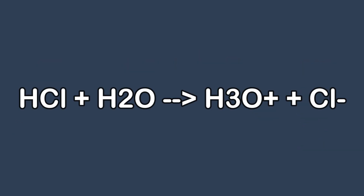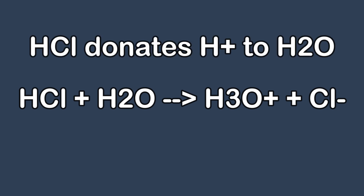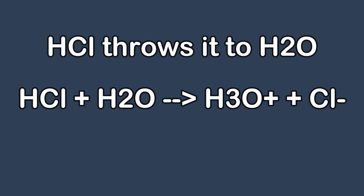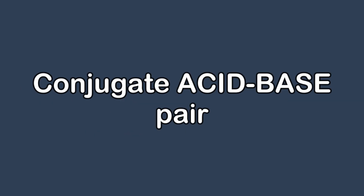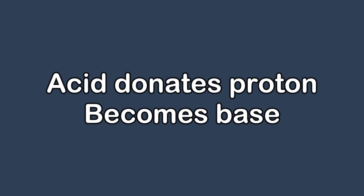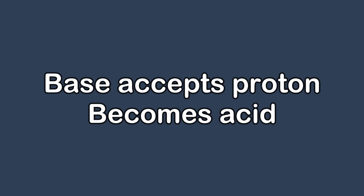An actual example: hydrogen chloride plus water turns into hydronium plus chloride minus. In this, the hydrogen chloride is the proton donor, or the pitcher, and the H₂O is the proton acceptor, or the catcher. In Bronsted-Lowry equations, we can find the conjugate acid-base pairs. A conjugate acid-base pair can be summed up as: acid donates proton, becomes base; base accepts proton, becomes acid.